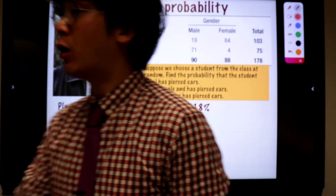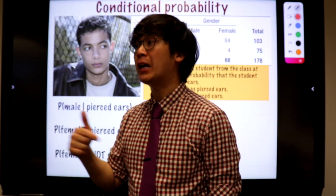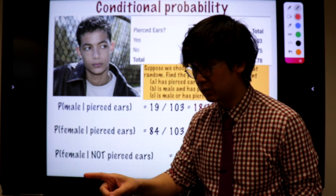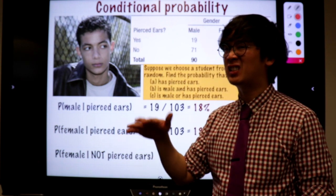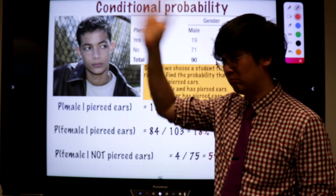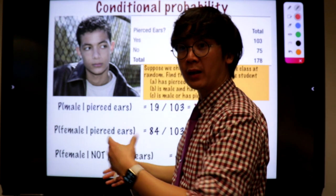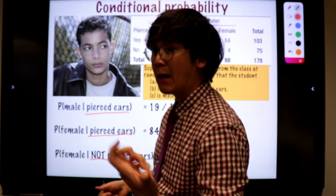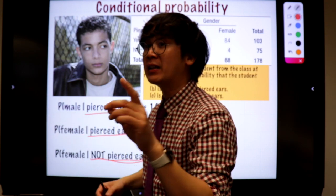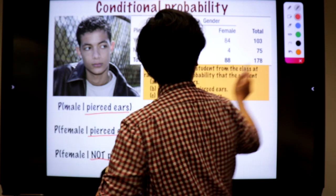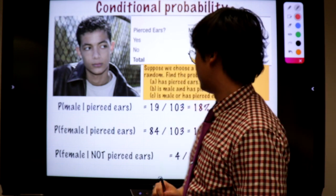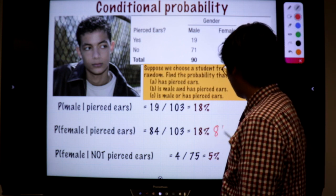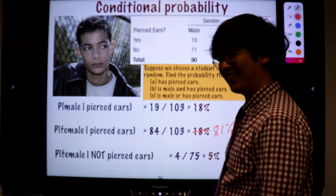You're really understanding conditional probability if you're accurately getting the fractions — not guessing. The condition or the second adjective is your sample space. The 84 out of 103 is 81% — that's a typo, I'm going to edit it.